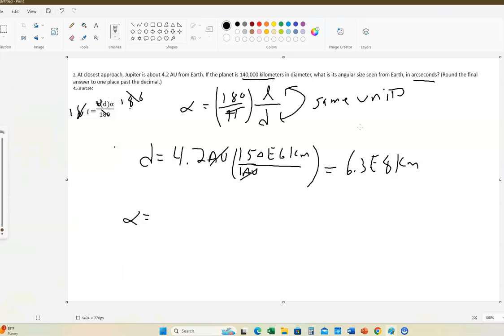So alpha now is going to come out in degrees and it's going to be a really small number, so we're going to change that. 180 degrees divided by pi, and so that times script L is the diameter of Jupiter in this case, so it's 140,000 kilometers divided by 6.3 times 10 to the eighth kilometers. These two are now in the same units, so the kilometers cancel and that'll give us an answer in degrees. We'll change it into arc seconds in just a moment.